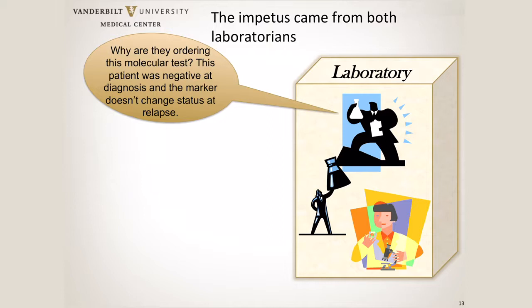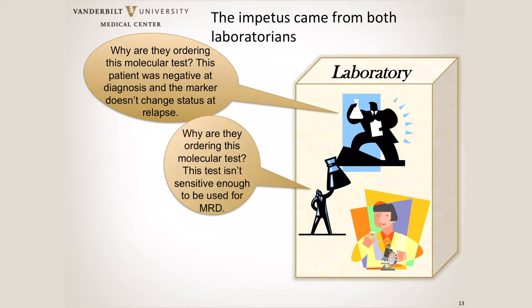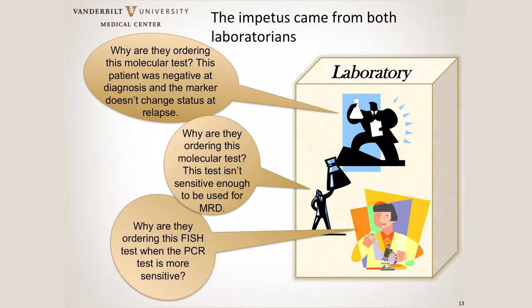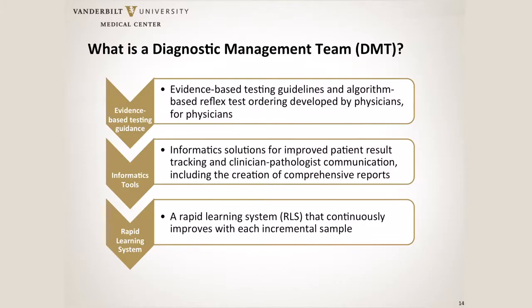Whereas from our standpoint, we're thinking: why are they ordering this test when the patient was negative at diagnosis? Why are we using it to monitor this patient? Or why are they ordering this molecular test — it's not sensitive enough to be used for MRD. Or they're ordering both FISH and PCR, but we know the PCR detects this person's clone, so why do both when the PCR is much more sensitive? So we had our own frustrations, and we all came together and came up with a diagnostic management team.